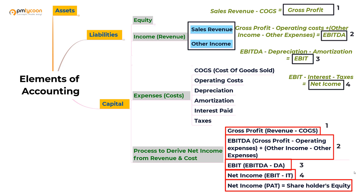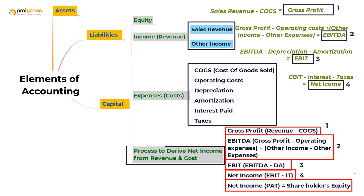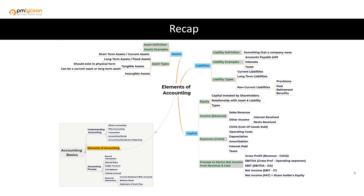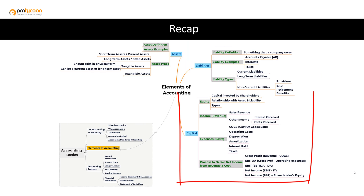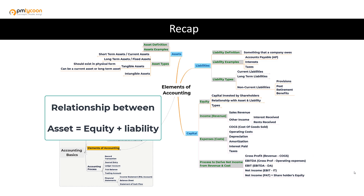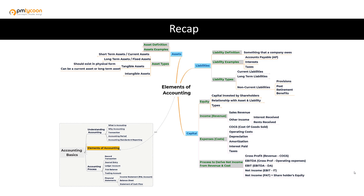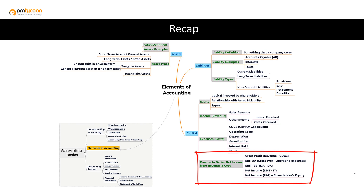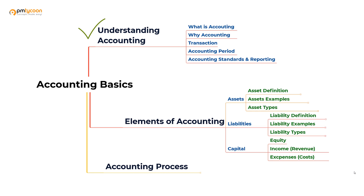Now that you know the two types of revenue — direct revenue and indirect revenue — and the types of expenses — COGS, operating costs, depreciation, amortization, interest, and taxes — it should be easier to compute net income. Let's do a quick recap. In elements of accounting, we learned what is an asset and its types, what is a liability and its types, what is equity and its types, and the relationship between assets, equity, and liabilities. We also looked into the types of revenues and classified expenses as COGS, operating costs, depreciation, amortization, interest, and taxes, then derived net income.